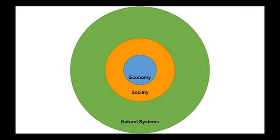On the outer circle is natural systems, comprised of the environment, resources, and things from nature. The next circle is society — people, governance, and institutions developed by humans — which sits within the natural systems circle because we exist in the environment and use those resources to live, work, eat, and survive. The economy circle is in the center because humans developed the economy, comprised of trade, goods, and services — tools or materials made from the environment. The circles are nested because they're all interlinked.